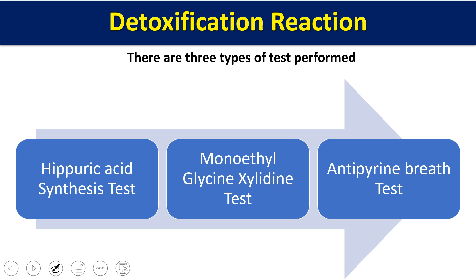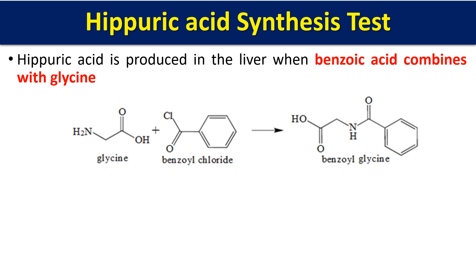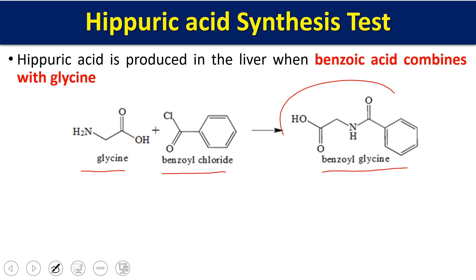We have three types of tests to evaluate the liver's detoxification reaction status. The first is the hippuric acid synthesis test. Hippuric acid is normally produced by the liver when benzoic acid combines with glycine. The liver synthesizes glycine, which combines with benzoic acid or its derivatives to give benzoylglycine — this is hippuric acid. The chemical name of hippuric acid is benzoylglycine.